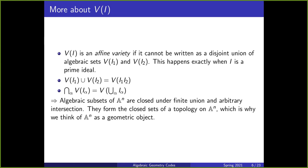We can perform certain operations on algebraic sets. In particular, algebraic subsets of the affine space are closed under finite union and arbitrary intersection. They form the closed sets of the topology on the n-dimensional affine space, which is why we think of the affine space as a geometric object.